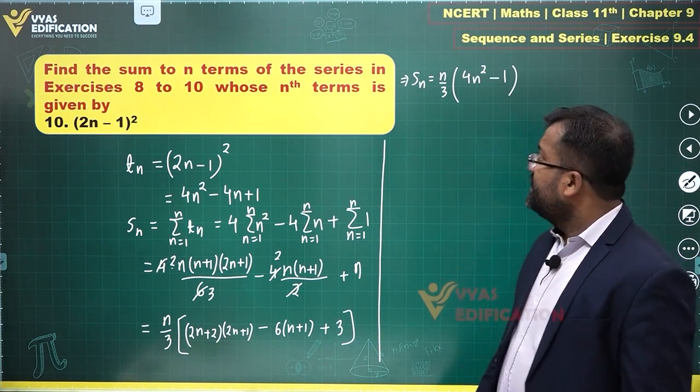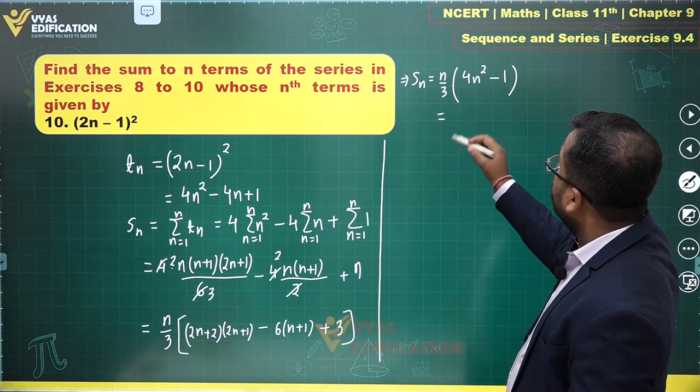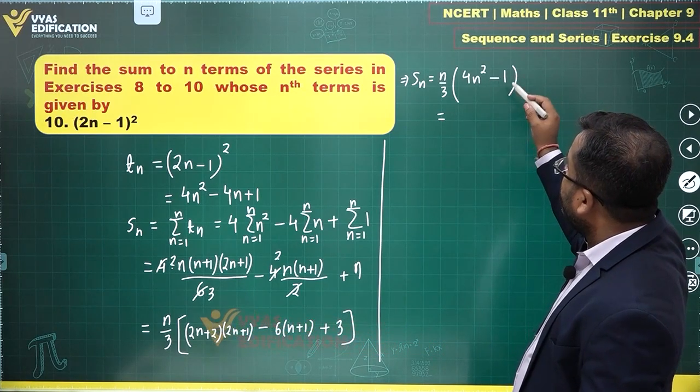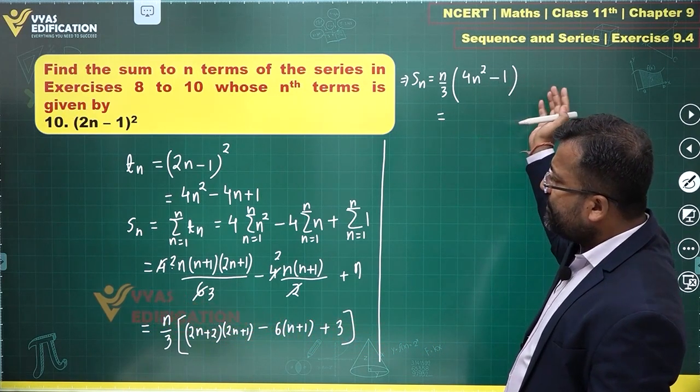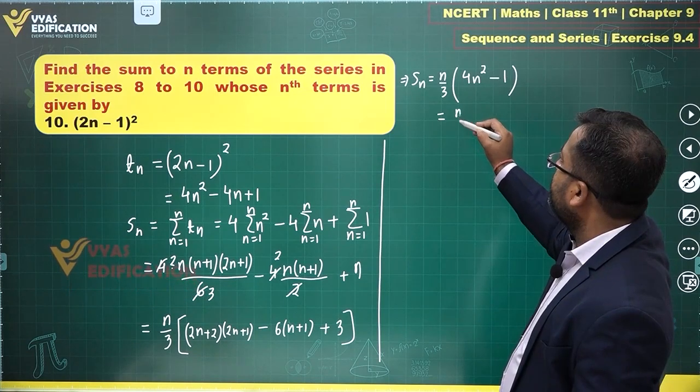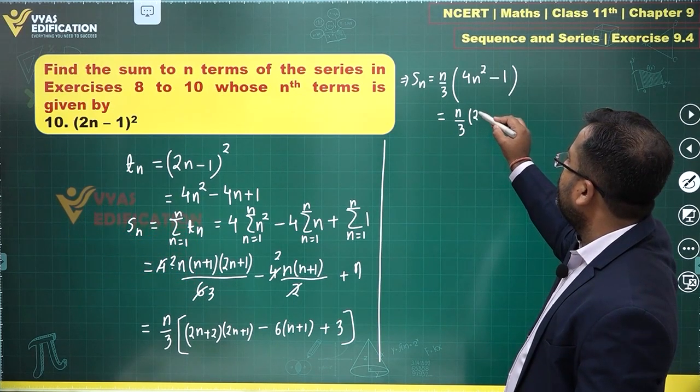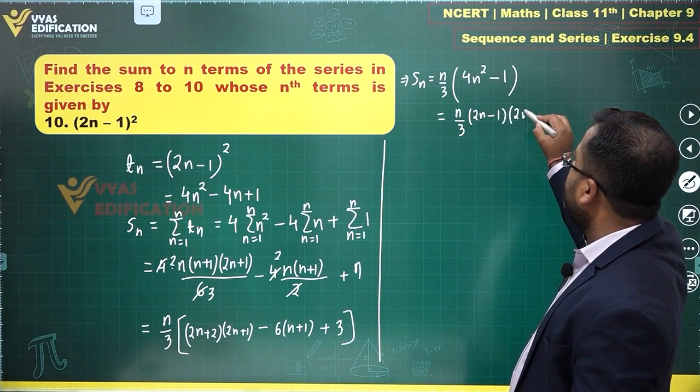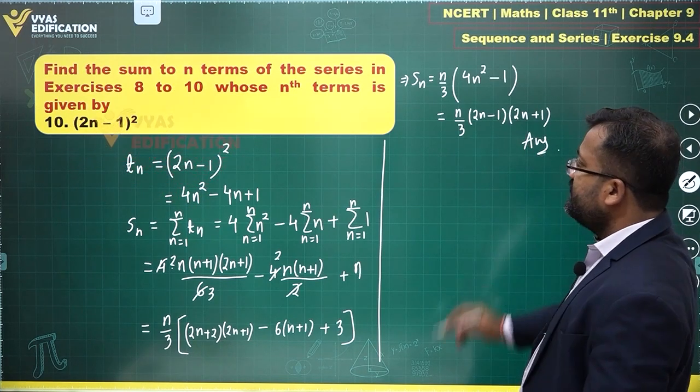That looks simple enough: 4n² minus 1, which can be factored as (2n-1)(2n+1). So n/3 times (2n-1)(2n+1) is my required answer for this question.